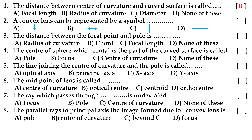Second question: a convex lens can be represented by the symbol — option A is correct. Third bit: the distance between the focal point and pole is — option A radius of curvature, option B diameter, option C focal length, option D none of these. The correct answer is C, focal length.